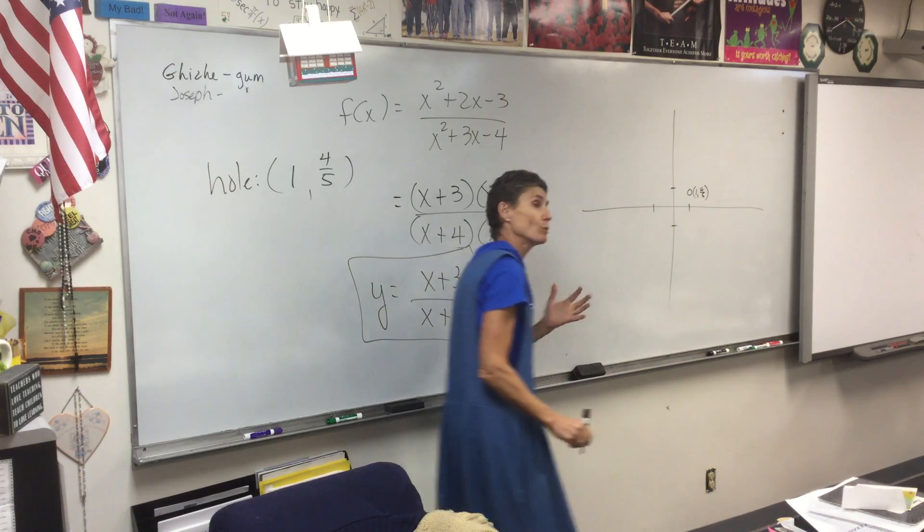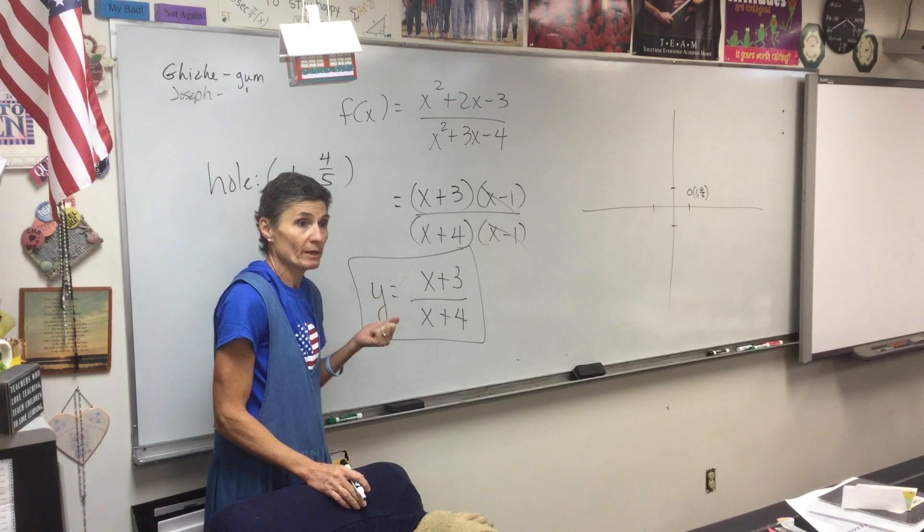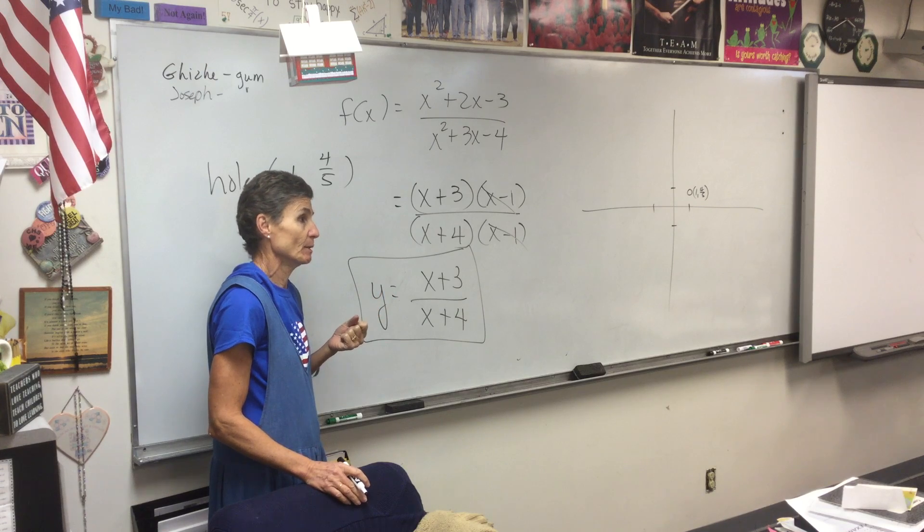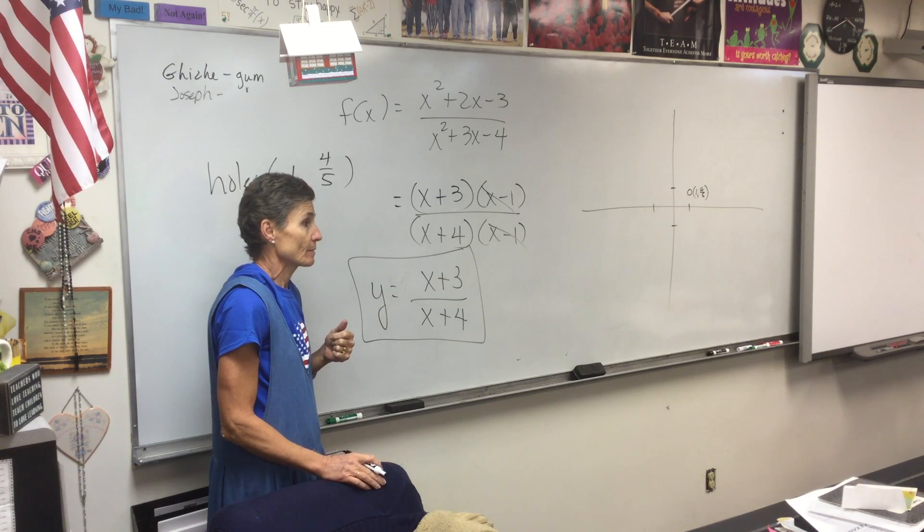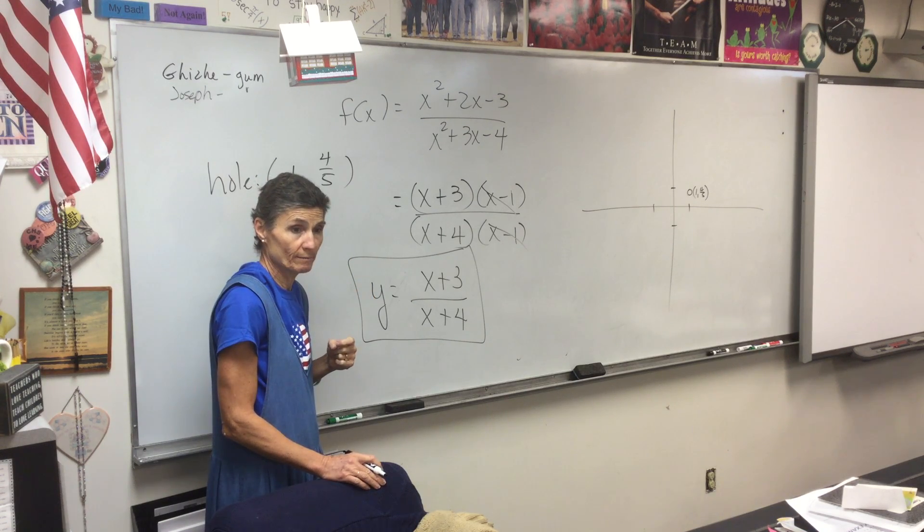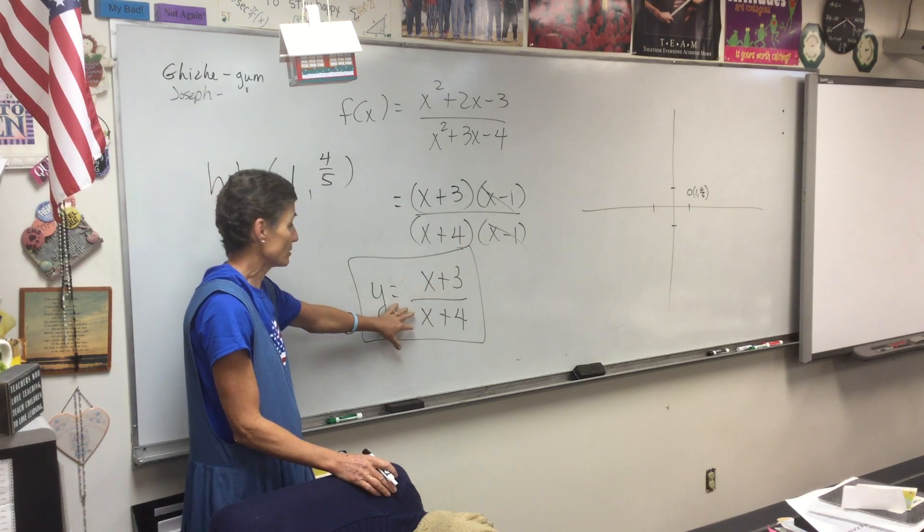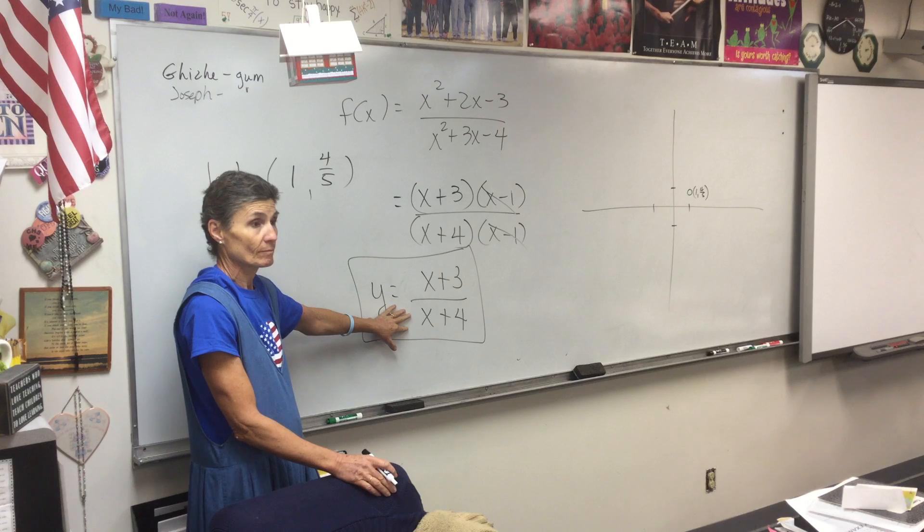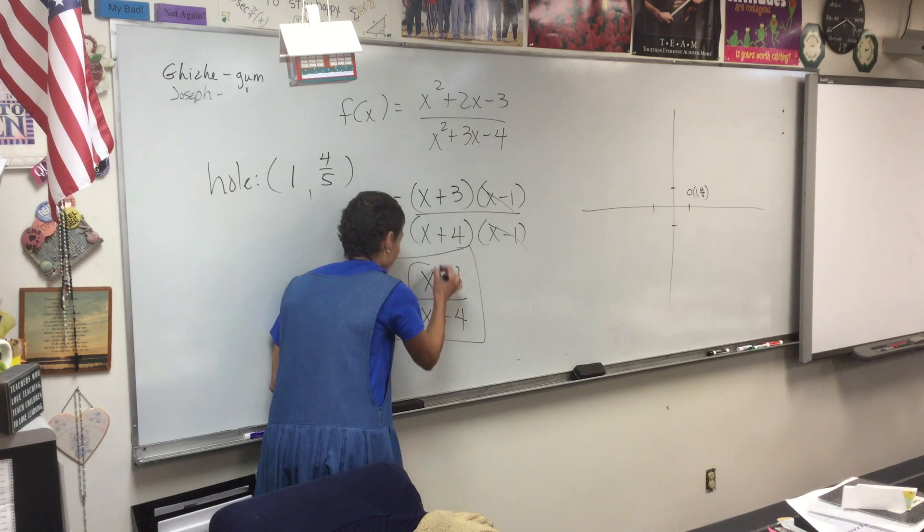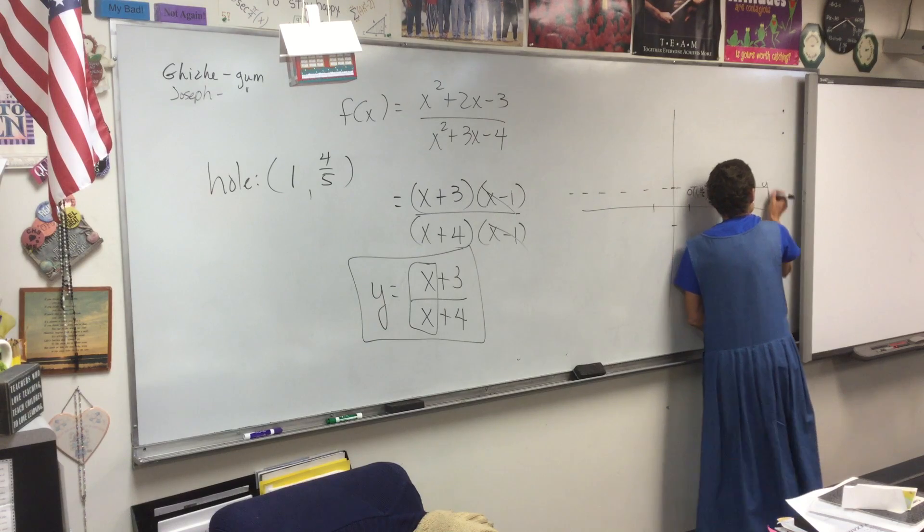Four-fifths is a little bit less than one. If it doesn't make sense to you, figure it decimally, point eight. Five-fifths is one, so four-fifths is a little bit less than one. Now what else do I have in my picture? The hole is taken care of, that's done. What else do I have?